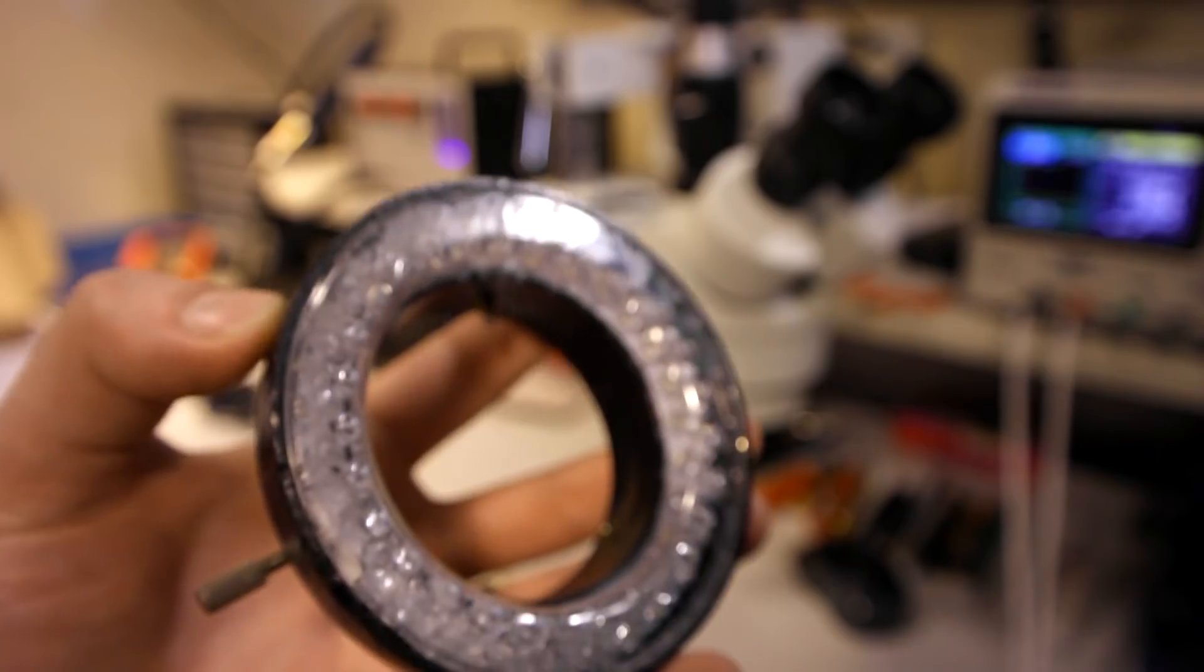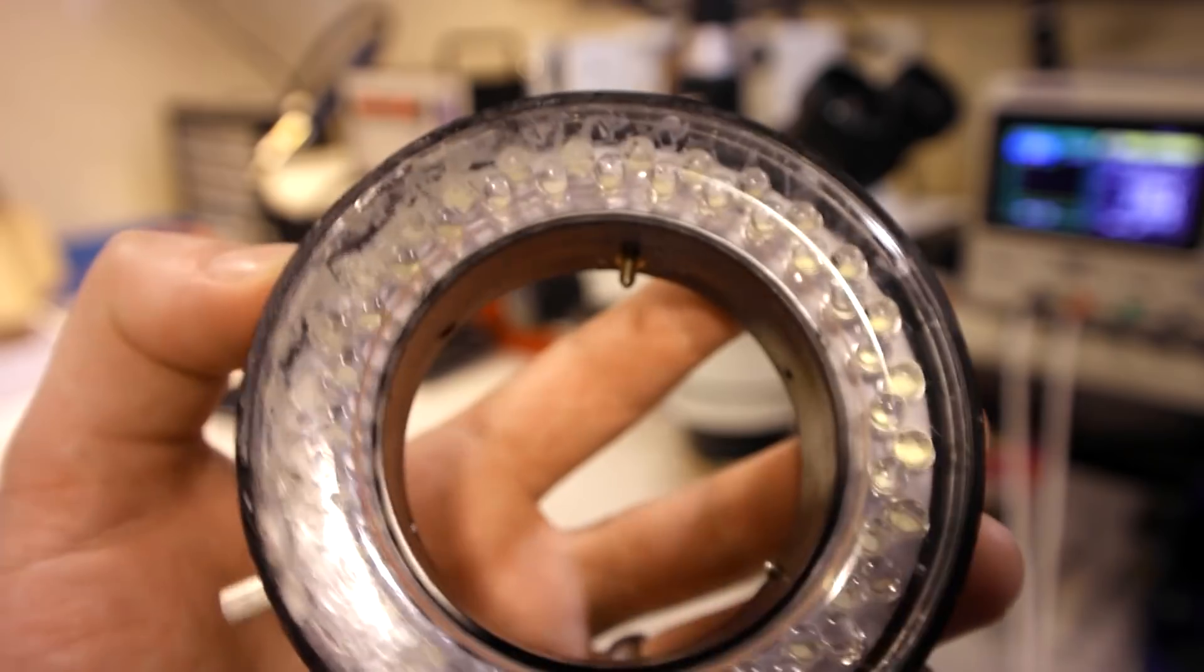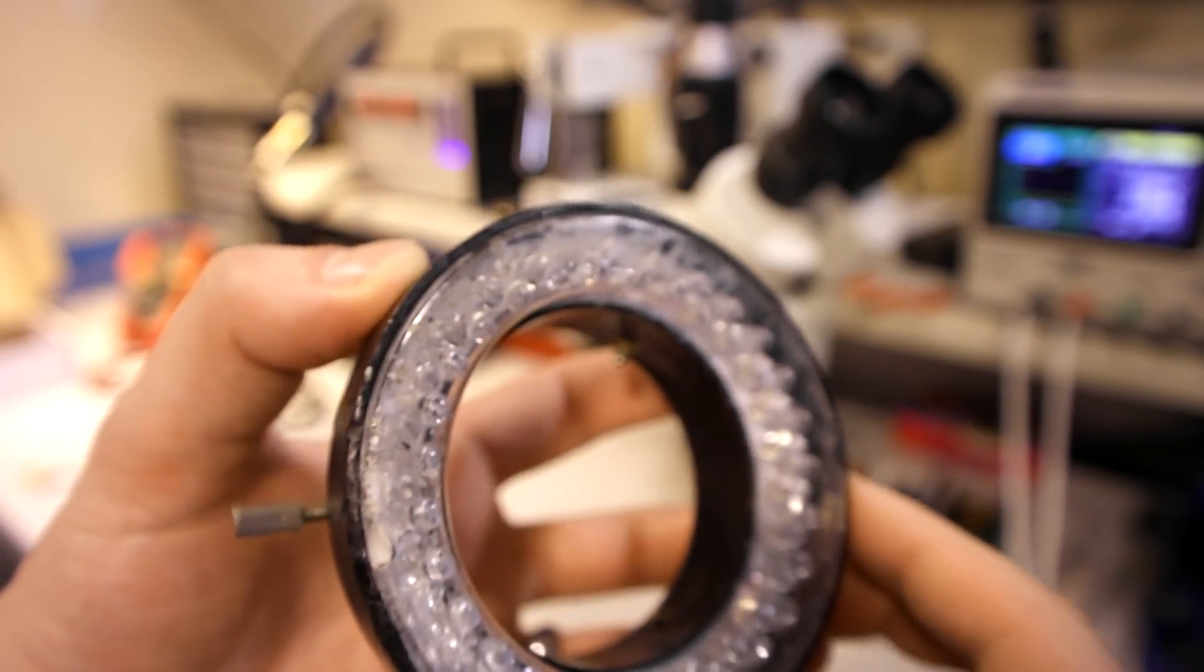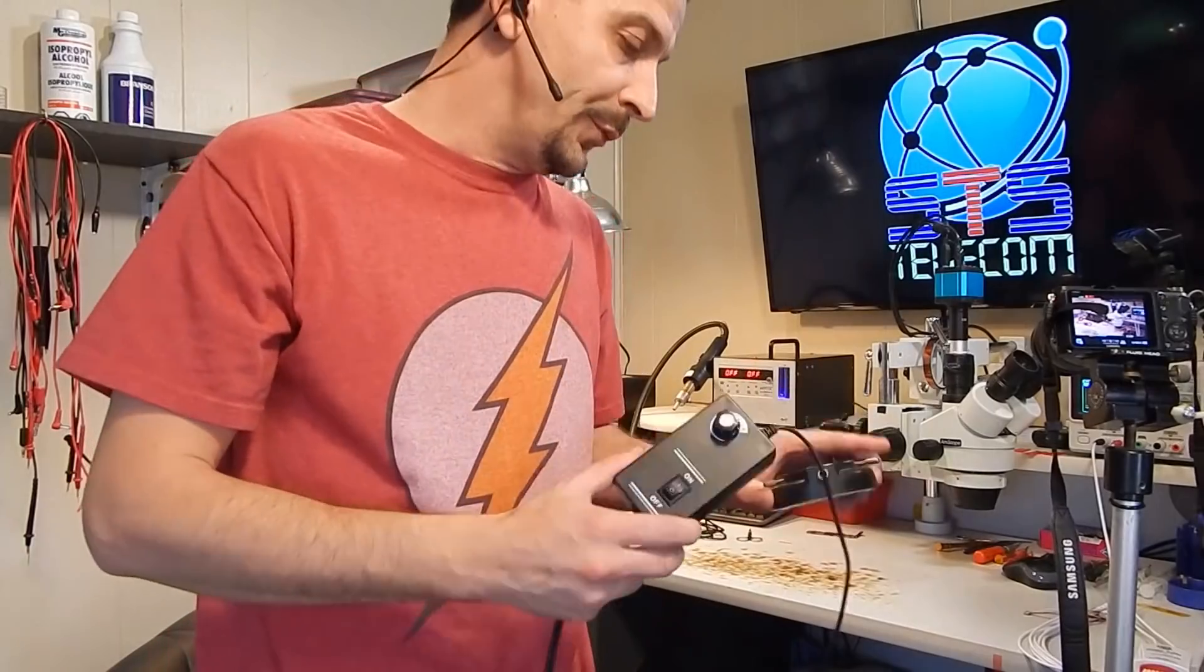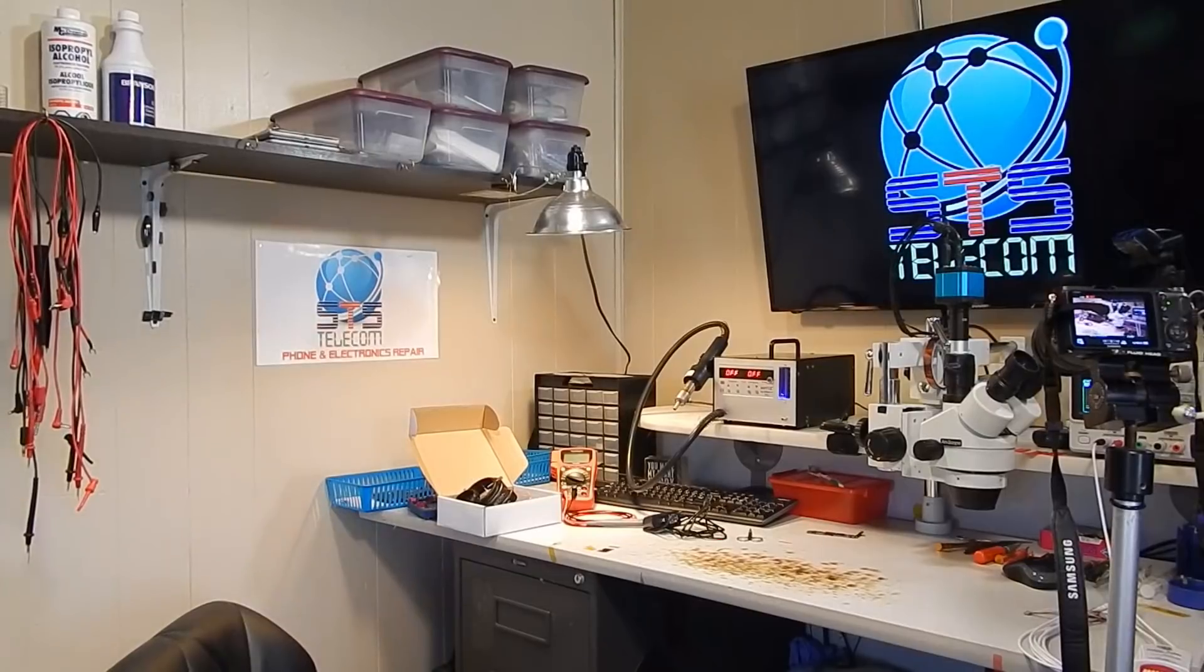Look at this, this is nasty. Maybe there's nothing wrong with it at all, it's simply dimmer just from being disgusting. Take the old power supply, old light, set it aside. I'm going to clean that up and use that on my other microscope.